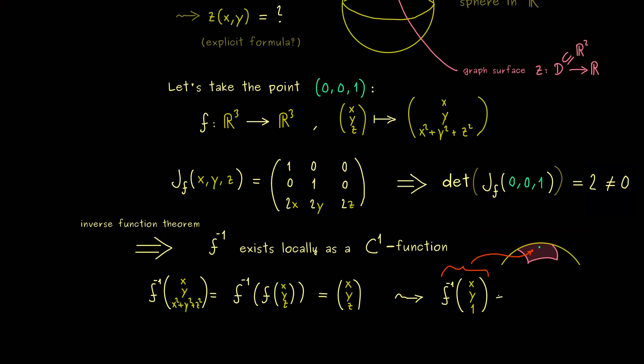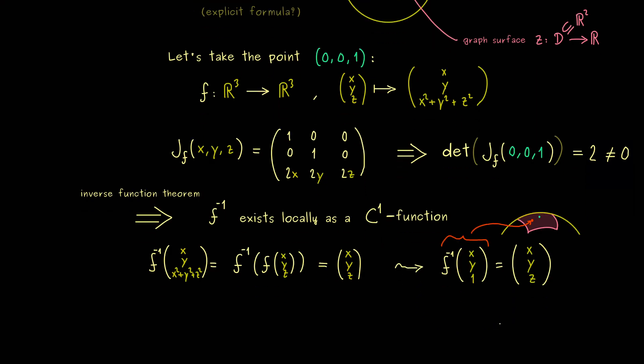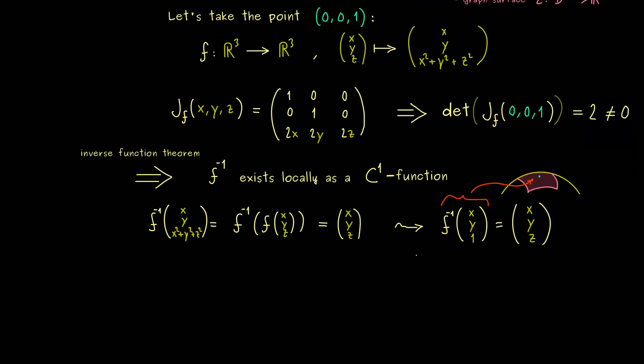And by using the equation from the left hand side, we already know that we don't change the variables x and y at all. In other words, this inverse function gives us the description for the variable z. Or to put it in other words, the last line here, the last component of f inverse gives us the function z of (x, y). So our inverse function theorem gives us the explicit formula for the function z of (x, y).